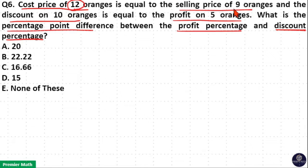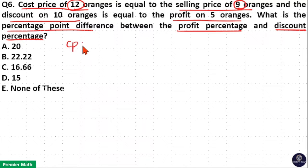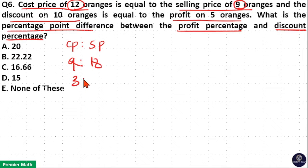CP of 12 is equal to SP of 9, which means CP is equal to 9 and SP is equal to 12. Now take the ratio: CP to SP ratio is equal to 9 is to 12, which is equal to 3 is to 4.